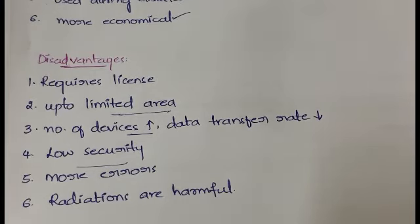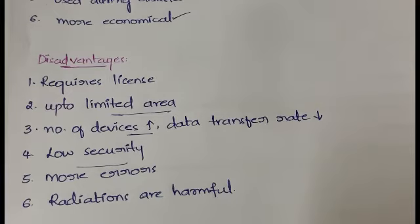So these are the disadvantages of wireless LAN. We discussed what wireless LAN is, six advantages, and six disadvantages. To quickly revise the disadvantages: it requires a license, it is limited to a limited area, the data transfer rate decreases as the number of devices increases, it has low security, more errors, and the radiations emitted are harmful to health.